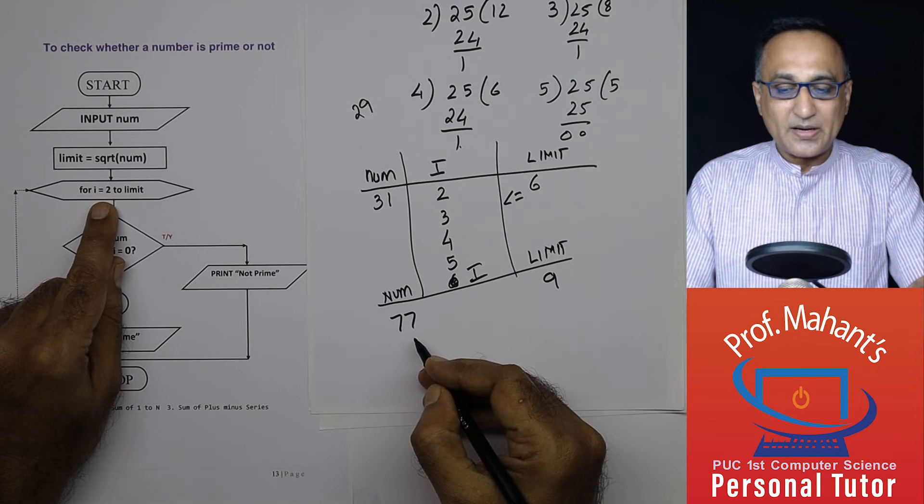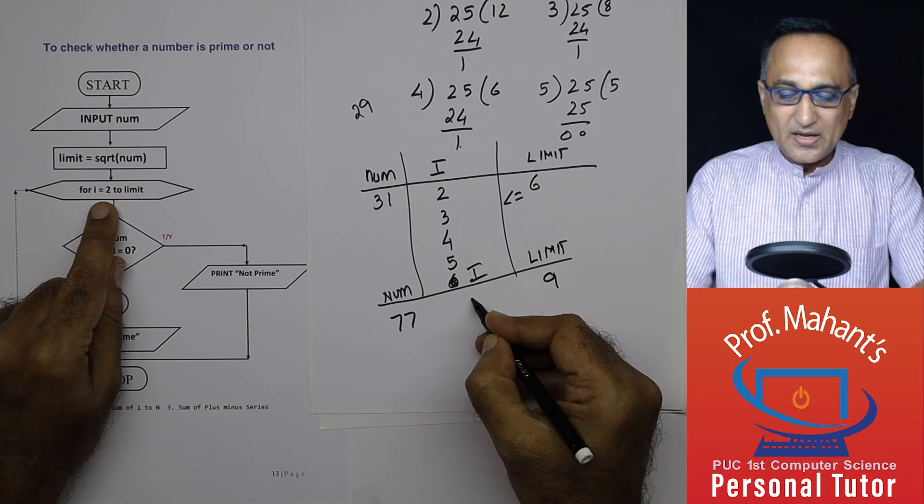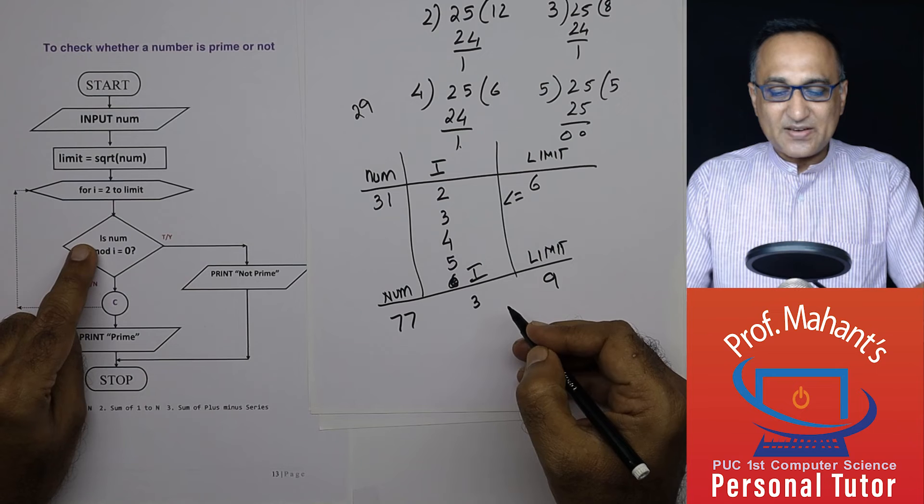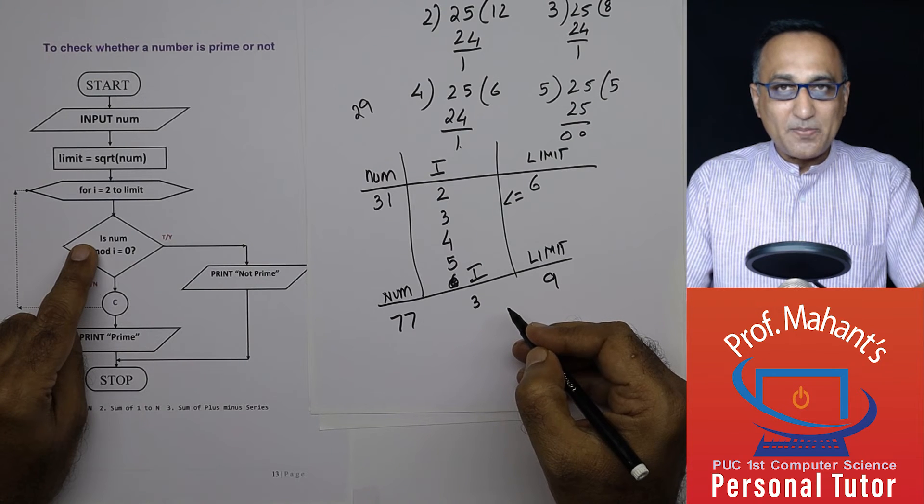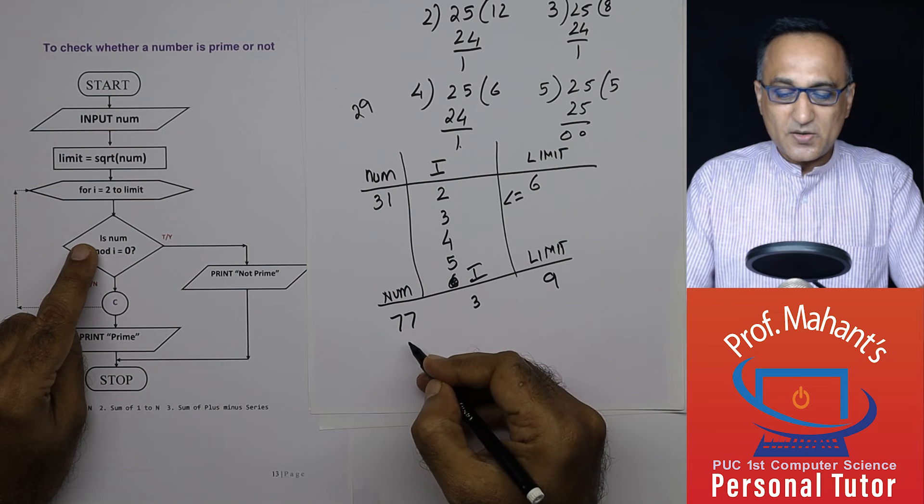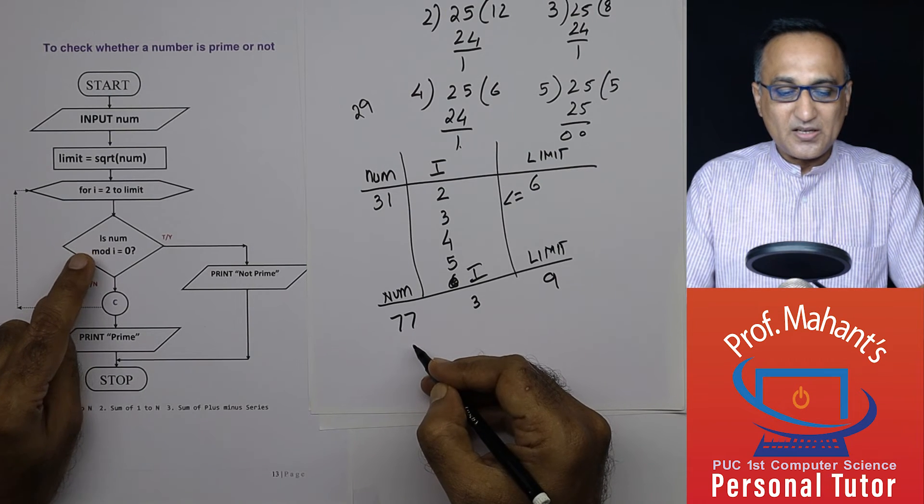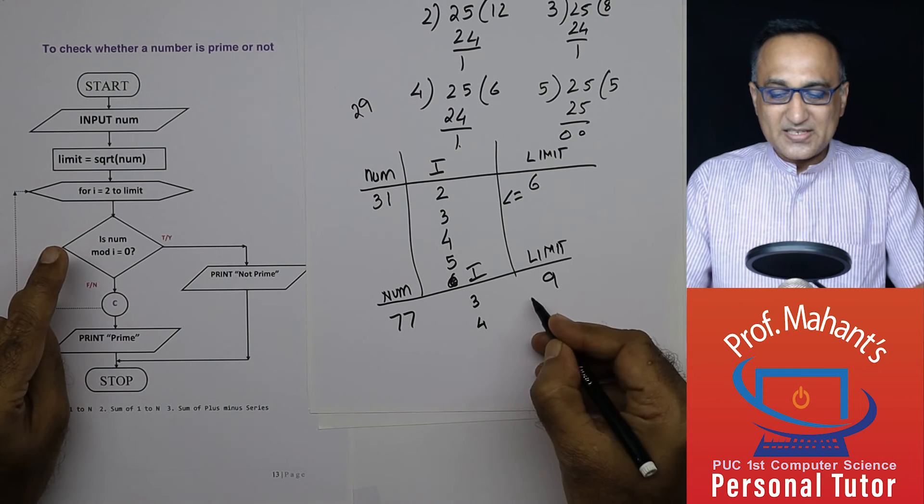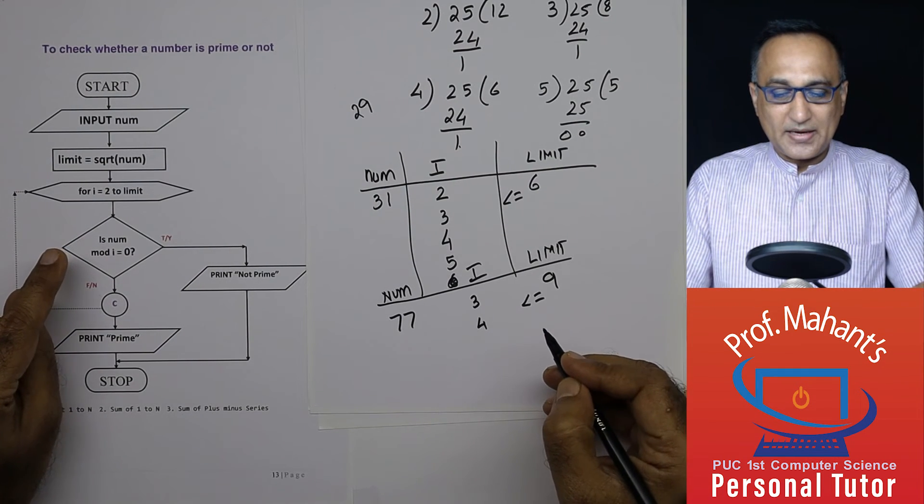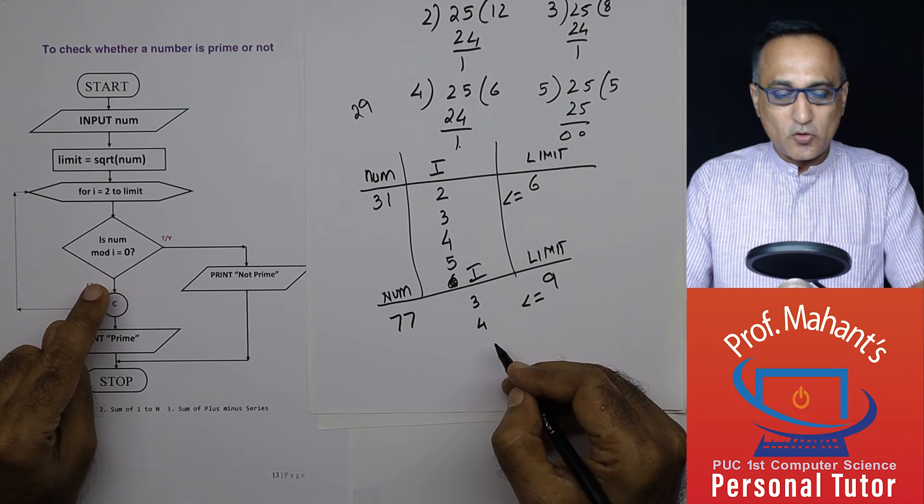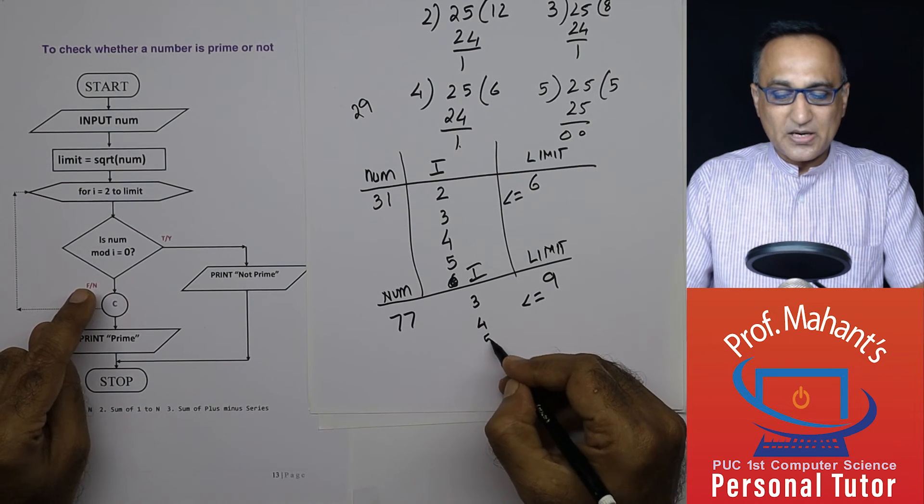77 divided by 2. The remainder is 1. So i becomes 3 and we go back here. 77 divided by 3. So is it divisible by 3? No. Again, there is going to be a remainder. So i becomes 4. 4 is still less than or equal to 9. 77 mod 4 is equal to 0? No. So we go back here. i ends up becoming 5.